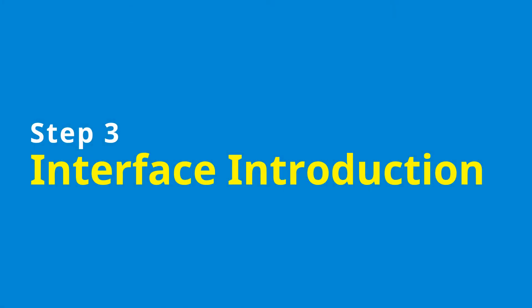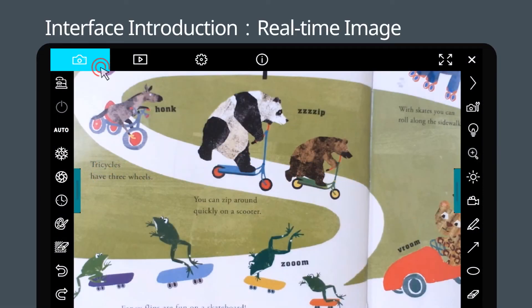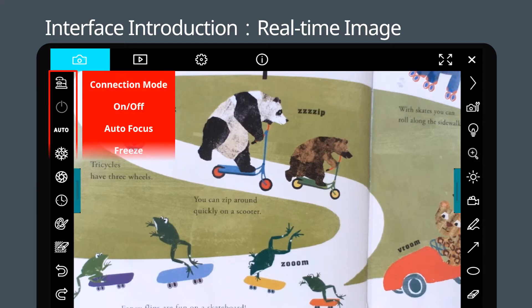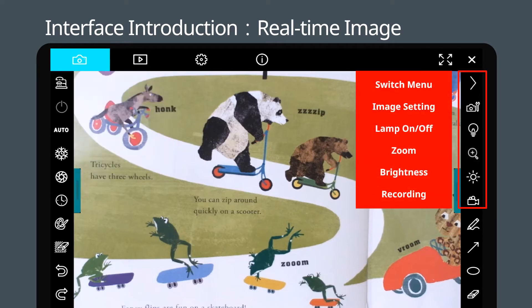Step 3: Interface Introduction. Select the real-time image button and you can see the function menu on both sides. Select the left function menu to change the connection mode of the camera, freeze, and capture the image. On the right side of the function menu, you can use the drawing tool, image setting, zoom in, and recording function.